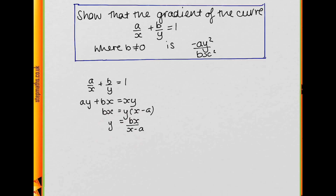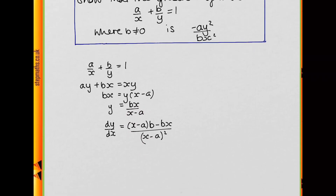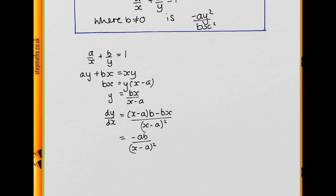Remembering this, we can now differentiate using the quotient rule. Using the quotient rule, we get [(x - a)·b - bx·1] / (x - a)², where b is the derivative of the numerator and 1 is the derivative of the denominator. Note that xb - bx cancels, leaving -ab over (x - a)².